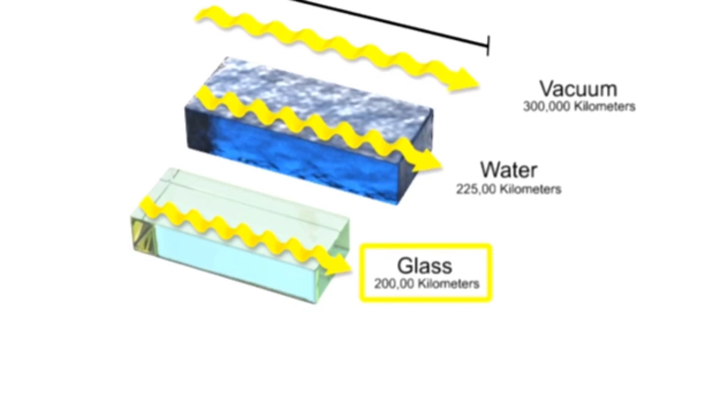Light travels very slowly through a diamond at about 41% of the speed of light, or 125,000 km per second, which is less than half the speed of light in a vacuum.